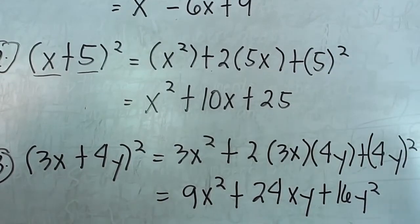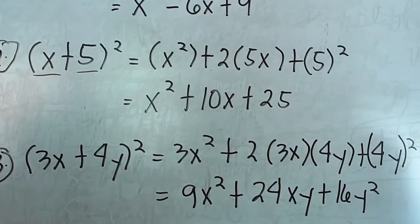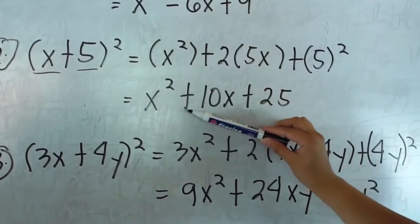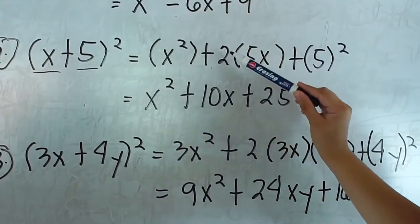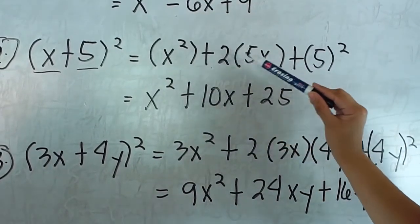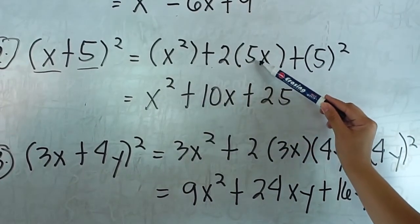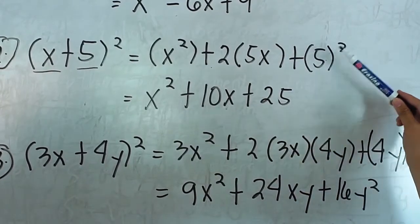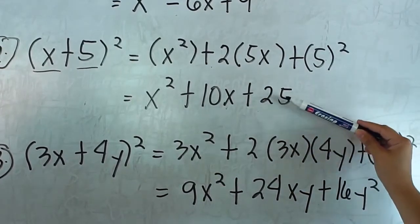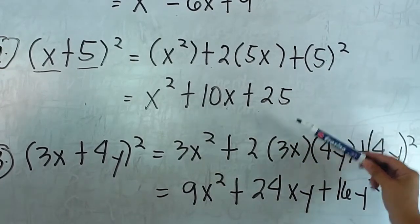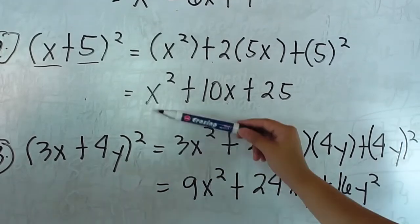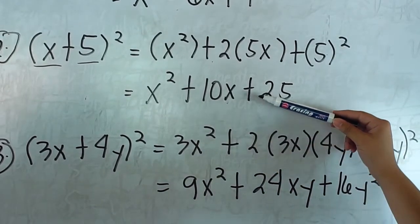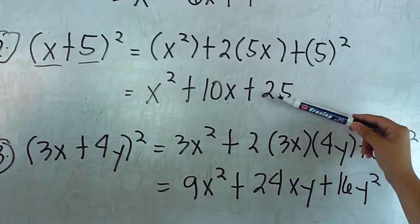We simplify the solution: x squared plus 2 times 5x is 10x, and 5 squared is 25. So our final answer is x squared plus 10x plus 25.